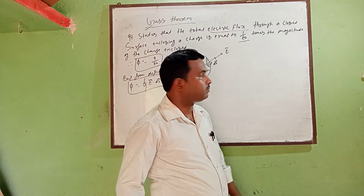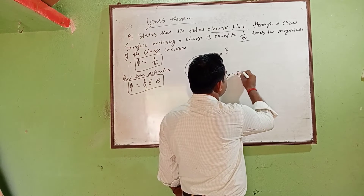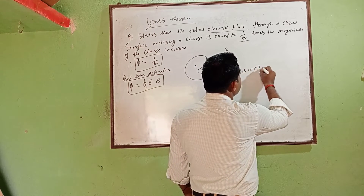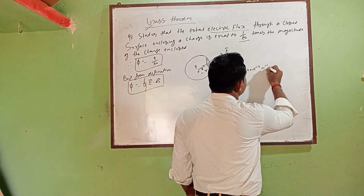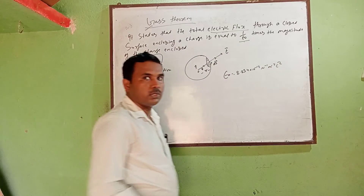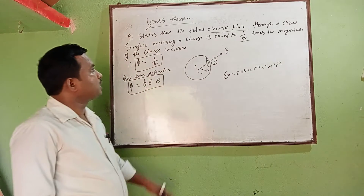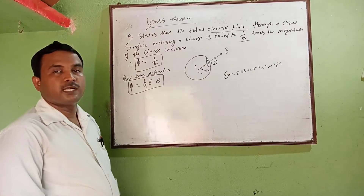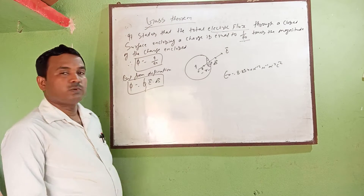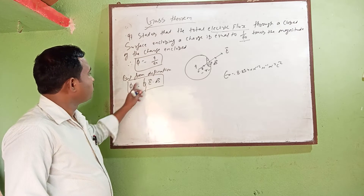The value of epsilon naught is equal to 8.854 into 10 to the power minus 12 Coulomb square per Newton per meter square. According to this statement we can write: phi is equal to Q by epsilon naught.